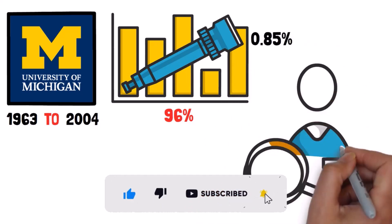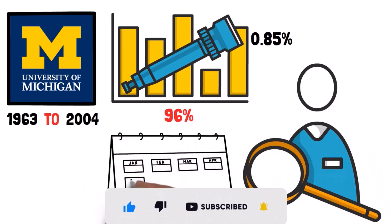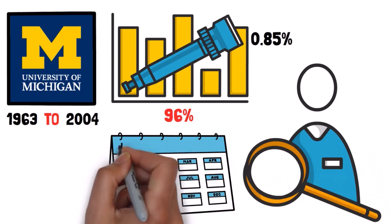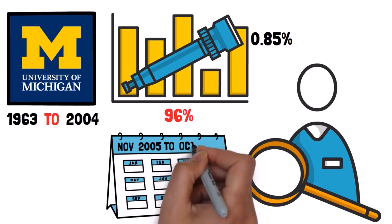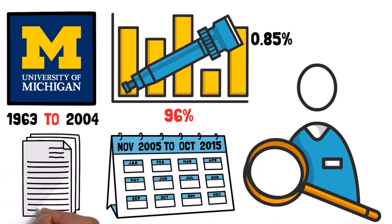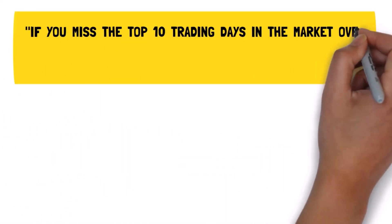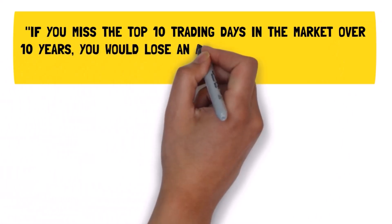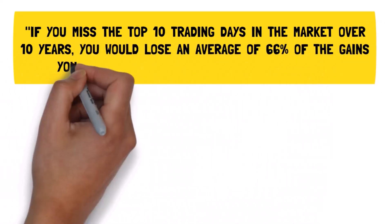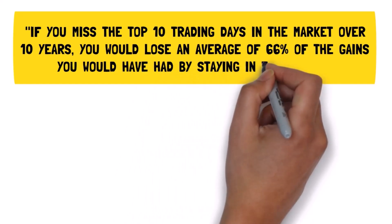One of the world's best stock analysts delved into this phenomenon and looked at a 10-year period from November 2005 to October 2015, analyzing data through various simulations. He concluded that if you miss the top 10 trading days in the market over 10 years, you would lose an average of 66% of the gains you would have had by staying in the market.